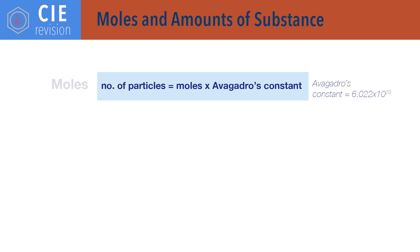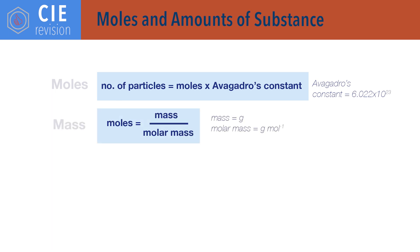For moles and amounts of substance. Number of particles equals moles of particle times Avogadro's constant, where the value of Avogadro's constant is 6.022 times 10 to the 23. Moles equals mass divided by molar mass. Note that the units for mass must be in grams and molar mass in grams per mole.